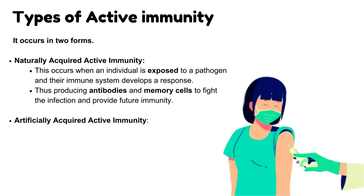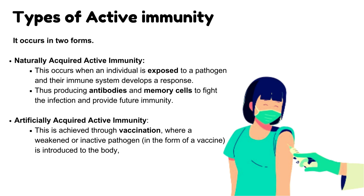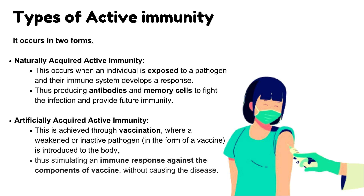Artificially Acquired Active Immunity is achieved through vaccination, where a weakened or inactive pathogen in the form of a vaccine is introduced to the body, thus stimulating an immune response against the components of the vaccine without causing the disease.